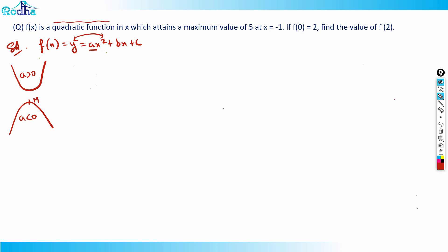So in this case, when the graph opens downward, the maximum is known and minimum is not known because minimum goes to minus infinity. When it opens upward, the graph minimum is known and maximum is not known because it goes to plus infinity. In this question the graph's maximum value is known — maximum value of 5 at x equal to minus 1 — so the graph must be the downward-opening shape.